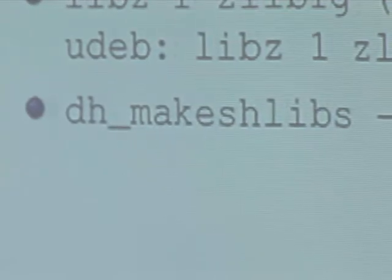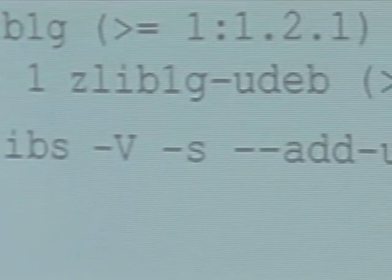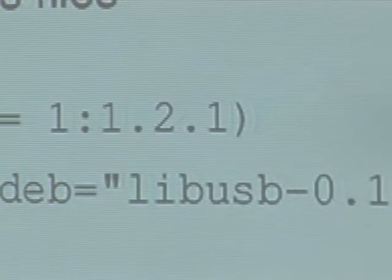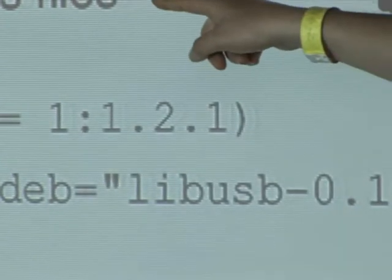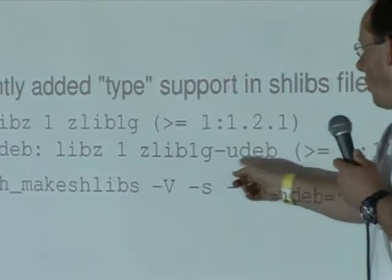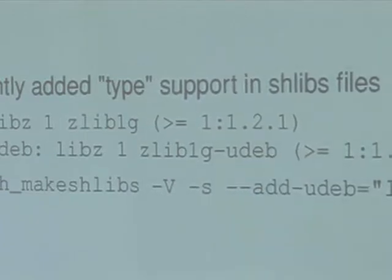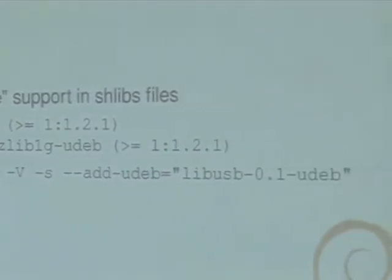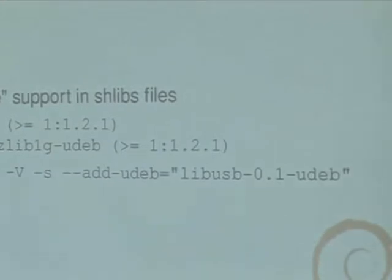What has been added is type support in dpkg-dev. It's currently only used for UDEPs, but it could be used for other types of packages. You can see that a second line is added in the shlib files starting with 'udeb:' and instead of referring to the name of the normal library, it refers to the name of the UDEP. To generate that extra line, you have to do something like that in your rules file — the magic is in the add-udeb option.